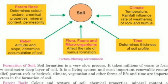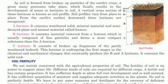Now we will study about soil profile. A vertical cross-section of the soil in its horizons is known as a soil profile. Soil profiles vary from place to place. From the earth's surface downward, three horizons are recognized. In the first, the A horizon, it contains weathered solid mineral materials and semi-decayed plant and animal material called humus.